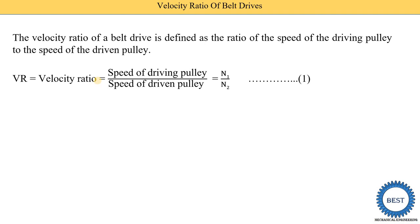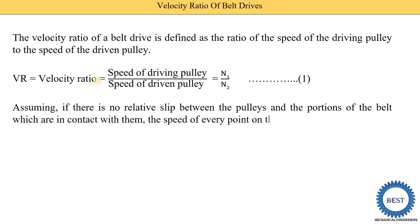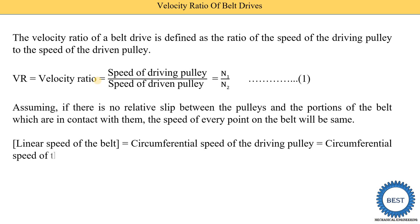Now we convert this velocity ratio in the form of diameter of the pulley. Assuming there is no relative slip between the pulley and the portion of the belt in contact with them, the speed of every point of the belt will be the same. At that time, the linear speed of the belt is equal to the circumferential speed of the driving pulley, which is equal to the circumferential speed of the driven pulley.